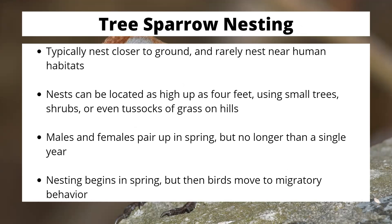The American tree sparrow nests closer to the ground and away from human habitat. Their nests can go as high as four feet using a small tree or shrub, and they can even use tussocks of grass on hilly areas. Males and females pair up in spring but are not monogamous — they mate for a year and then move on. After nesting, the birds move into a migratory pattern.